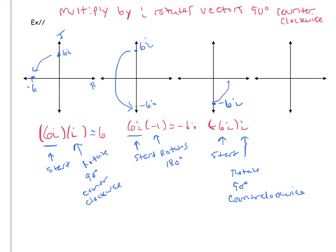And we're rotating 90 degrees counterclockwise. And that brings me here to 6. And obviously we know that if you do negative 6i times i, because i times i is i squared, which is negative 1, negative 6 times negative 1 indeed is 6.